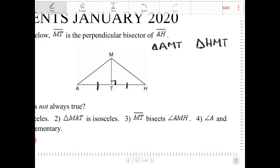These two triangles are actually going to be congruent, and how do I know that? Well, that's because MT is shared, and both of these are right angles. So therefore, these two triangles are going to be congruent based on side, angle, side.